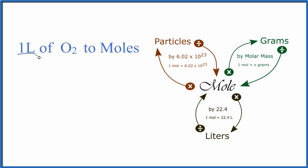So we're starting with liters. We have one liter. We want moles. And to go from liters to moles here in our mole map, liters to moles, we're going to divide by 22.4.